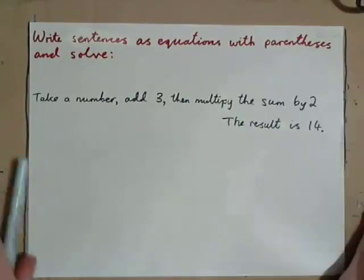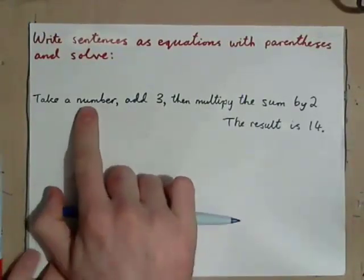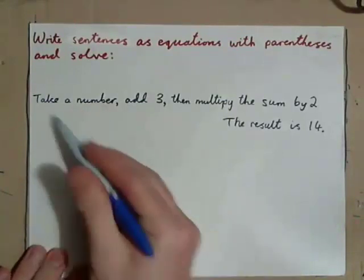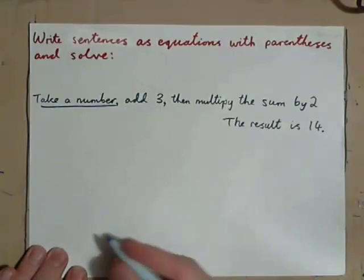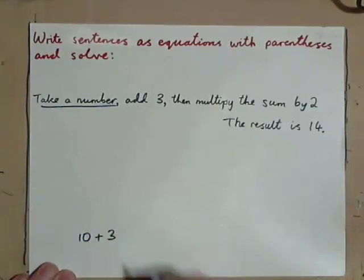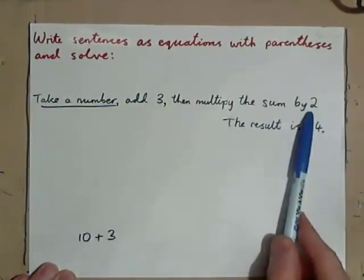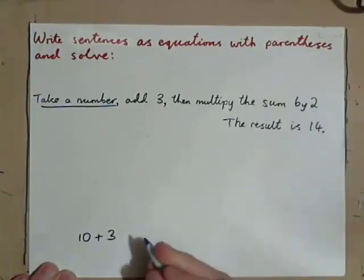Okay, let's first of all see what would happen if we knew the number. So it says right there, take a number, that's unknown. Well, let's say the number was 10. Take a number, add 3, then multiply the sum by 2. At this point, wouldn't you say the sum is 13?